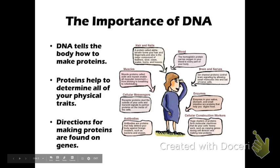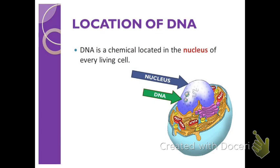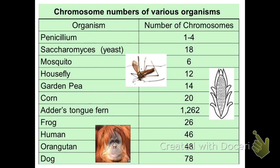DNA tells the body how to make proteins, proteins determine your physical traits, and DNA is where your genes are found. Interestingly, the number of chromosomes doesn't indicate how complex an organism is. For example, dogs have 78 chromosomes — more than our 46. Even yeast has 18 and corn has 20, so chromosome count is not dependent on organism size.